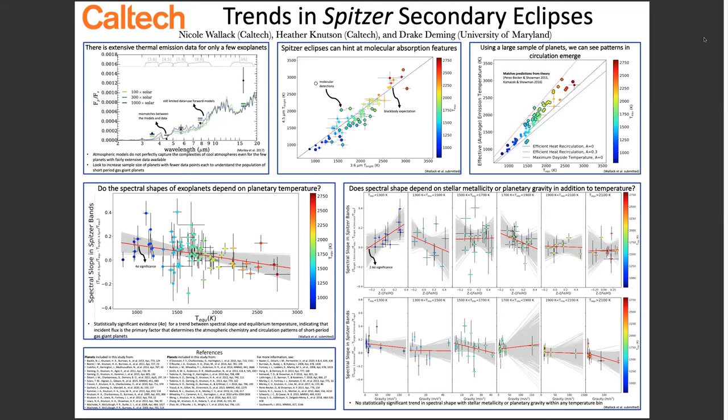Despite only having two data points per planet, we can leverage the fact that we have nearly 80 planets to investigate trends in the atmospheric composition and circulation patterns of short period gas giants. Using just the Spitzer data, we can see hints of molecular absorption features in individual systems, but we can also see patterns in circulation efficiency and trends in atmospheric composition with different system parameters.